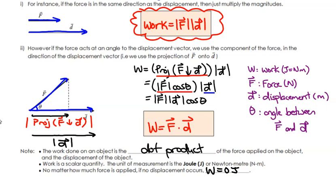Recall that cos theta can actually be a negative number, which would cause this entire formula to equal a negative number. That does actually make sense in terms of work — you can have a negative amount of work done. Also notice that the magnitude of F times magnitude of D times cos theta is actually just the dot product of F and D.